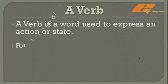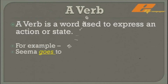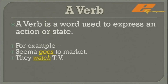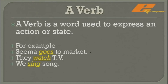See some examples. 'Seema goes to market' — the underlined word 'goes' shows an action of going, so it's a verb. 'They watch TV' — 'watch' shows an action of watching, so it's a verb. 'We sing a song' — 'sing' is an action. 'I will go to Japan' — 'go' is an action. 'John runs fast' — 'runs' is an action of running.